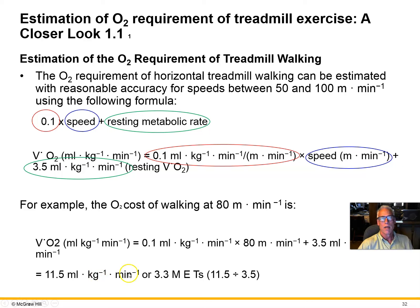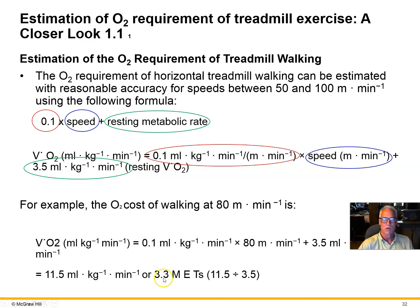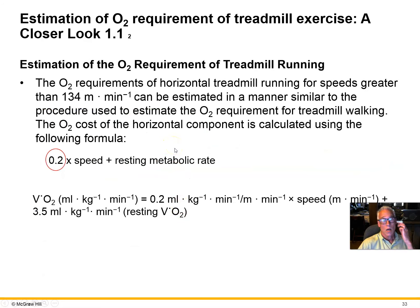So if we calculate that out using a walking speed of 80 meters per minute, we get 11.5 mL of oxygen per kilogram per minute. We can also express that as METs: dividing 11.5 by 3.5 gives us 3.3 METs as the work rate. If you do that often, you'll get familiar with what different MET values feel like, making it a practical way to express energy cost.